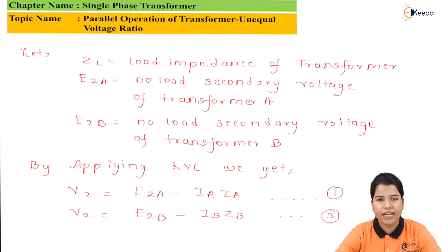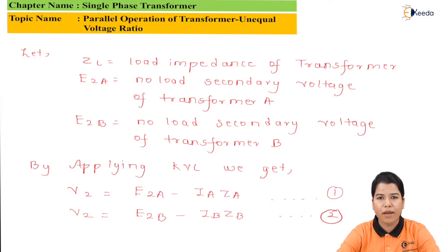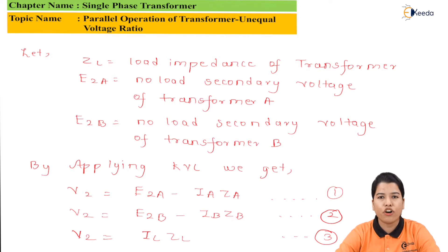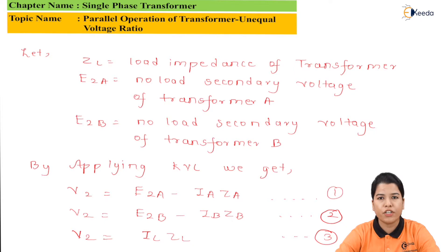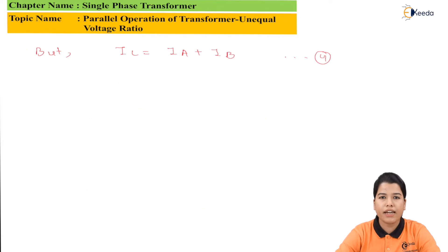Similarly, for load impedance ZL, the value of V2 can be written as V2 is equal to IL multiplied by ZL, where IL is the value of load current. Now we know that IL is the combination of the currents of the two transformers A and B. Hence the formula for IL can be written as IL is equal to IA plus IB. Let this be equation number 4.